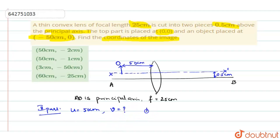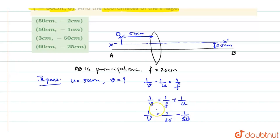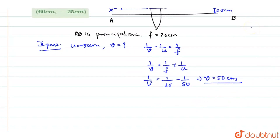Using the lens equation: 1/v − 1/u = 1/f. Rearranging, 1/v = 1/f + 1/u = 1/25 + (−1/50) = 1/25 − 1/50. This gives v = 50 cm. So the image distance is 50 cm.